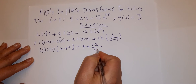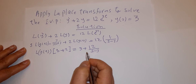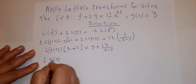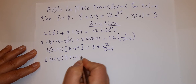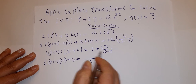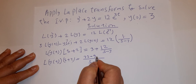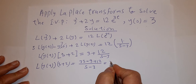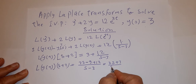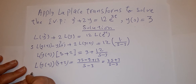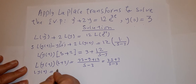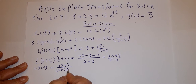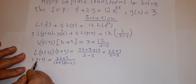Taking the common denominator, we write L{y(t)}·(s + 2) = 3 + 12/(s−3). The common denominator is (s−3), so by cross multiplication we get 3s − 9 + 12, which simplifies to (3s + 3)/(s−3). Dividing by (s + 2), we get L{y(t)} = (3s + 3) / [(s + 2)(s − 3)].